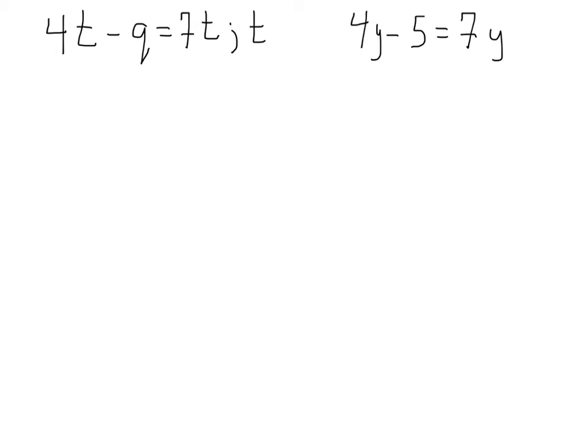All right, for our next one, we have 4t minus q equals 7t, and they want us to solve for t. Here, we have the different... What's different about this one here is we have the same variable t on both sides. So, let's look at a similar example with a variable on both sides. Here, we have 4y minus 5 equals 7y.